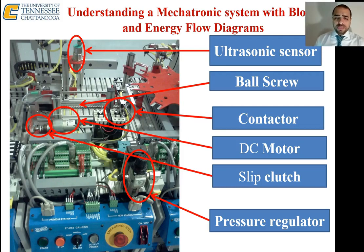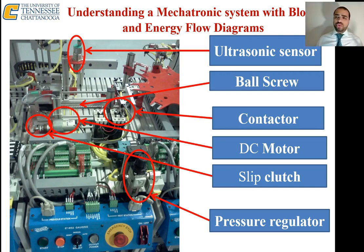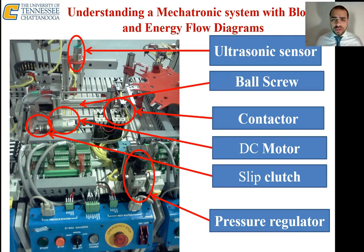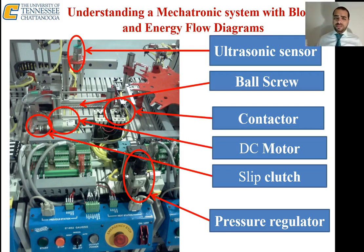The second step in troubleshooting is to understand how the modules are connected — in other words, understand the energy flow diagram, which tells you what is going on: where the workpiece comes from, where it goes, how it gets processed. You need to know the flow of the process in the system. After understanding the overall flow, you can then look into each module individually for more details.